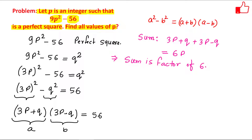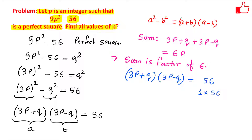We need two numbers (3p + q) and (3p - q) whose product is 56. The factor pairs of 56 are: 1 × 56, 2 × 28, 4 × 14, and 7 × 8. We also consider negative factor pairs: (-1)×(-56), (-2)×(-28), (-4)×(-14), and (-7)×(-8).